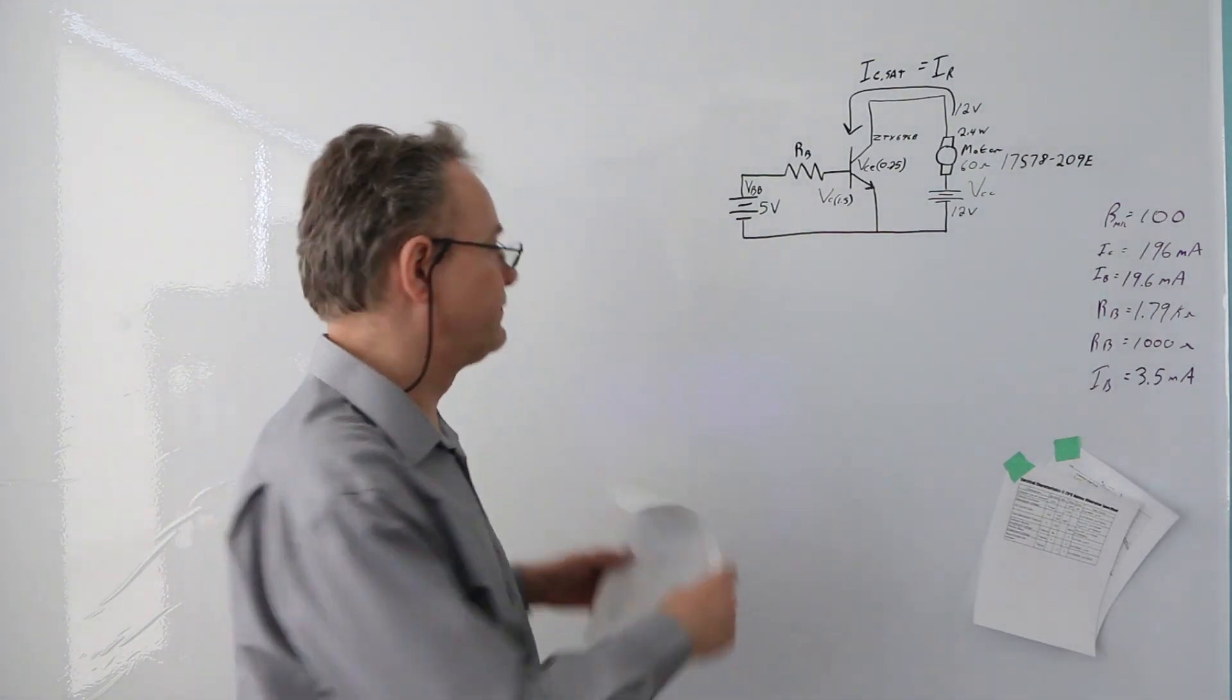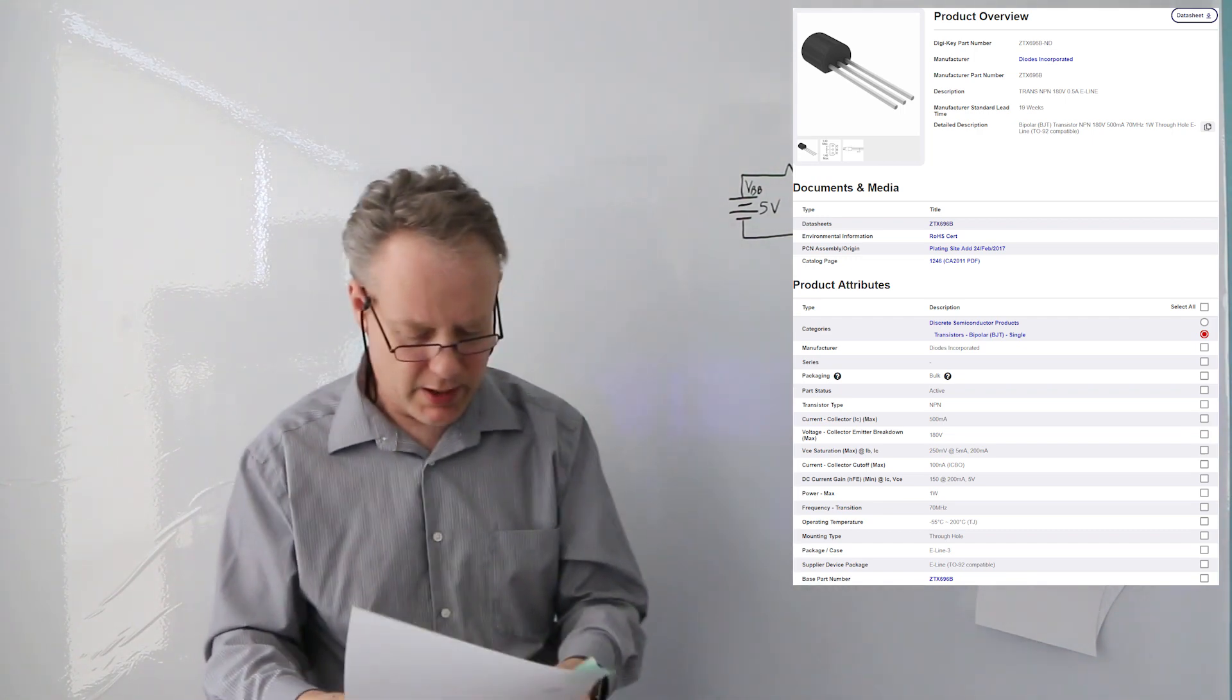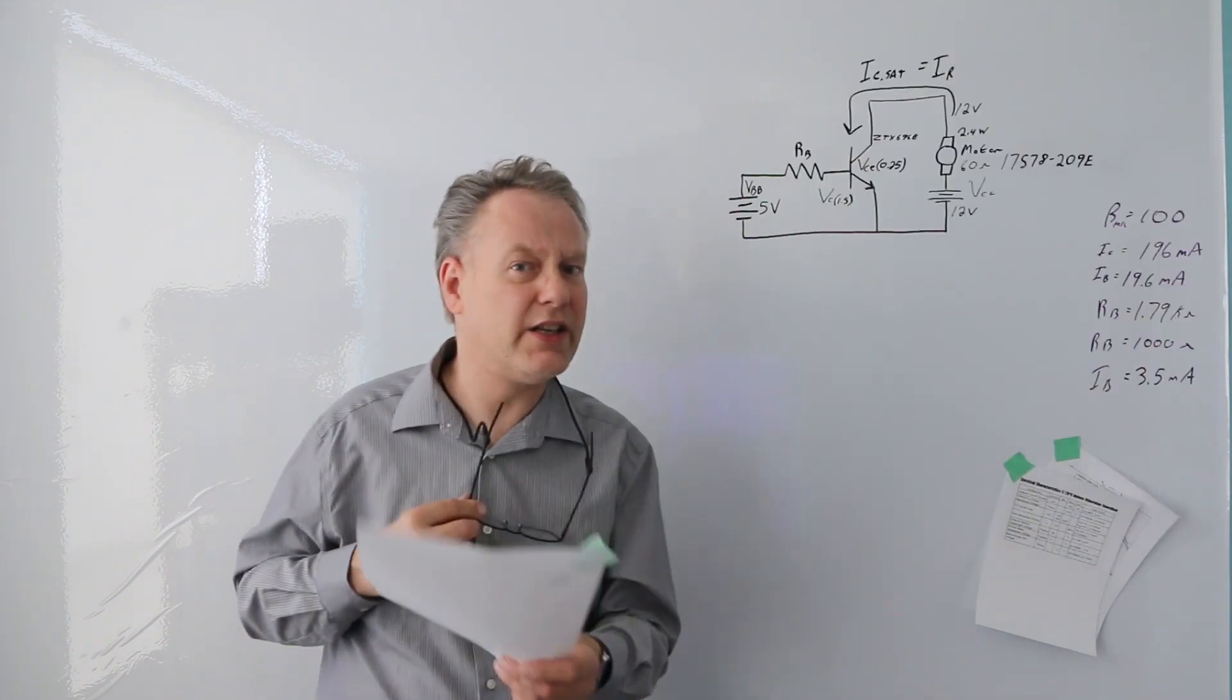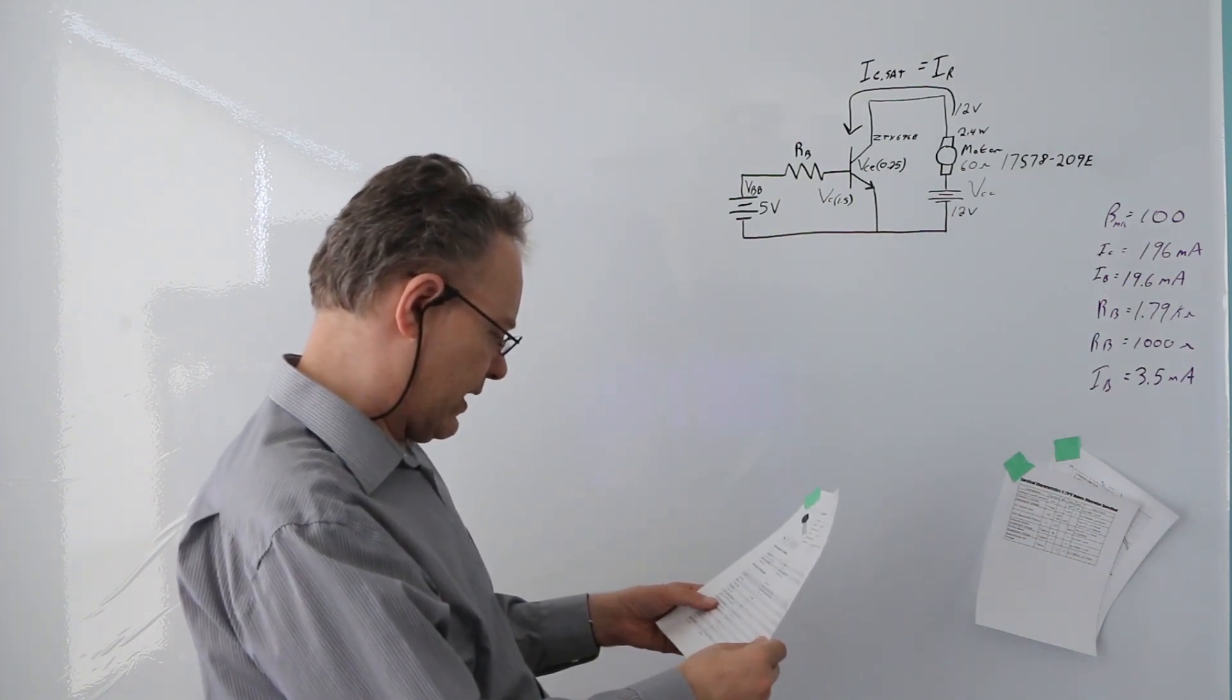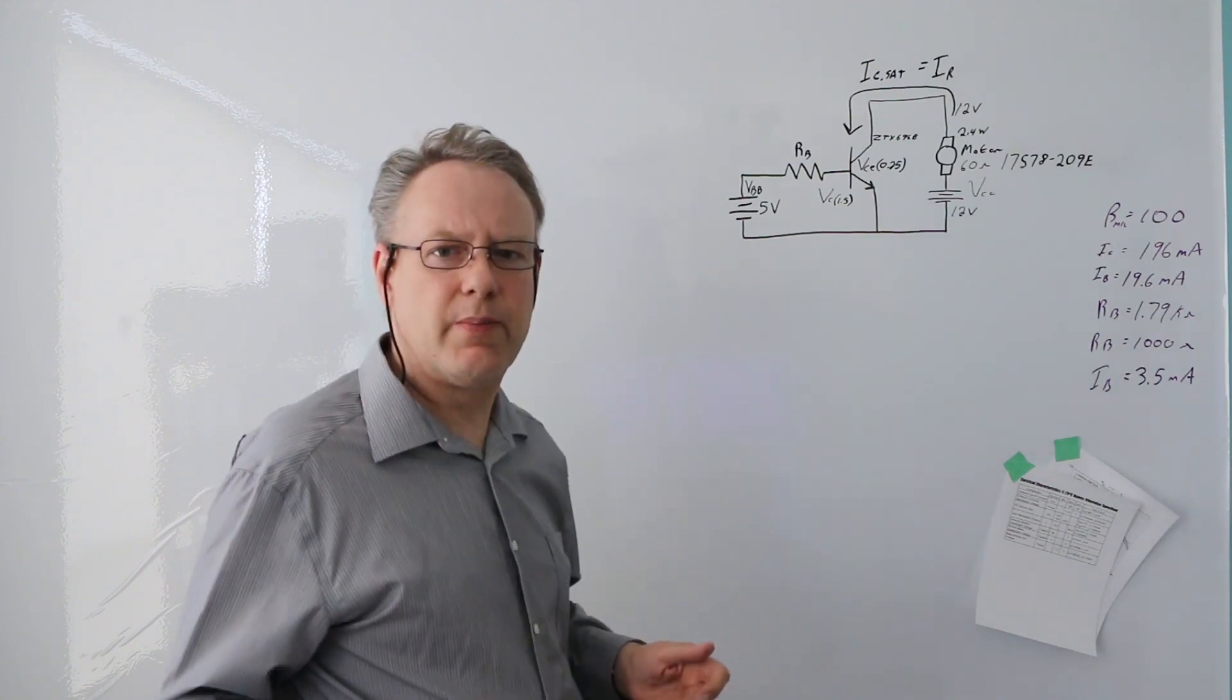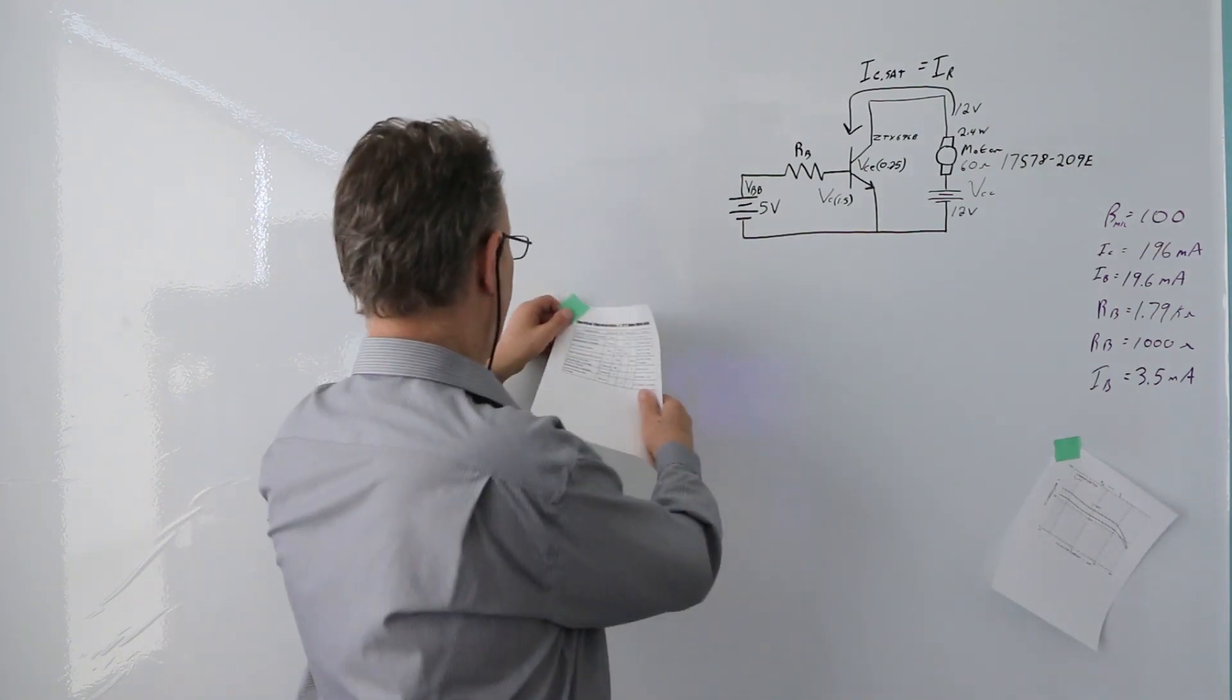Let's talk about the BJT. This BJT here is an NPN, and you can see that the collector current max is 500 milliamps. Just a little bit, but that's okay because all we actually need is 200, so we're good with that. Let's actually delve into the data sheet that I pulled off DigiKey.